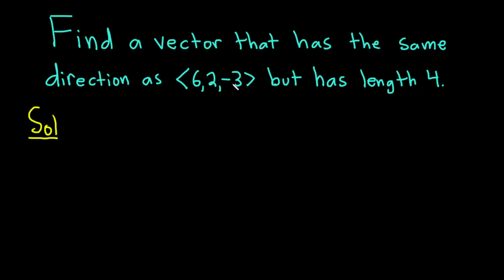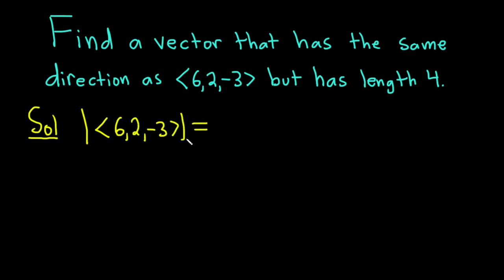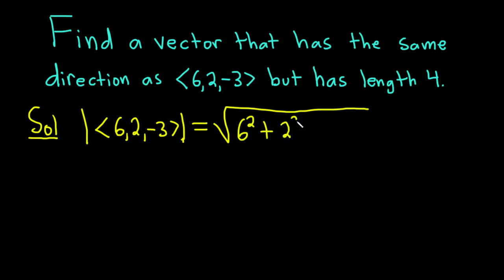The process of taking a vector and turning it into a unit vector is called normalizing the vector. The first step is to find the magnitude of this vector. The magnitude of the vector whose components are 6, 2, and negative 3 is given by the following formula. It is equal to the square root of 6 squared plus 2 squared plus negative 3 squared.